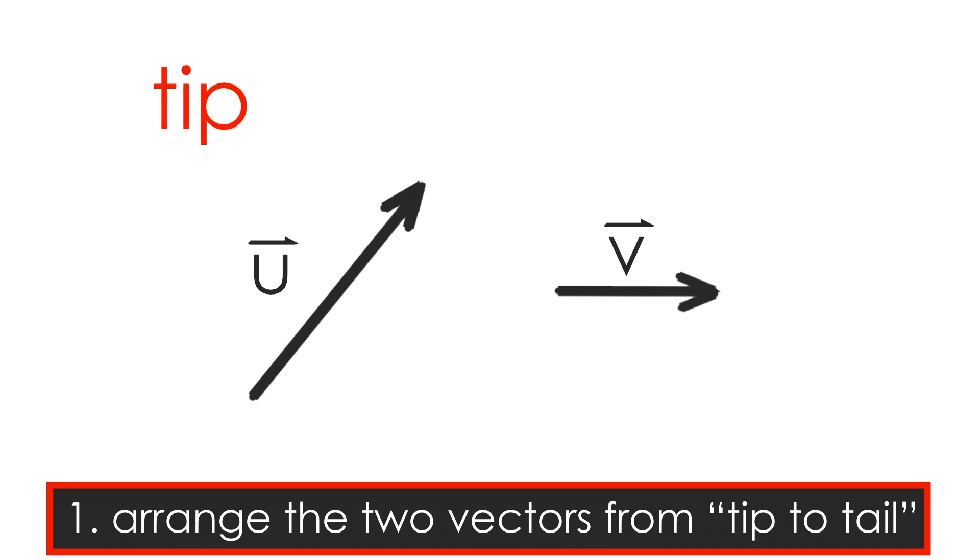This means that the tip of the first vector must touch the tail of the second vector. Notice that when you pick up a vector and move it, the magnitude, or size, and direction of the vector do not change.